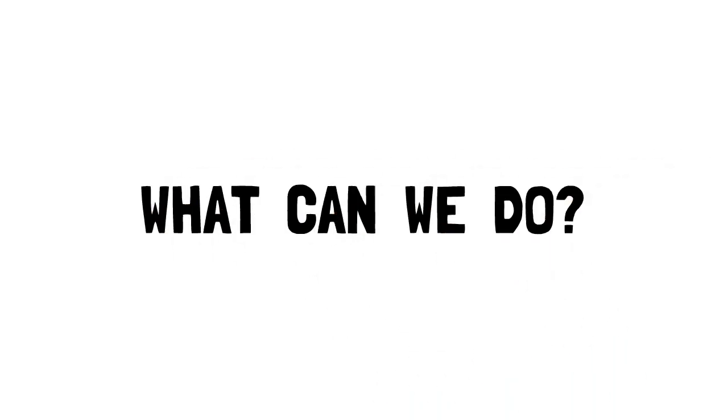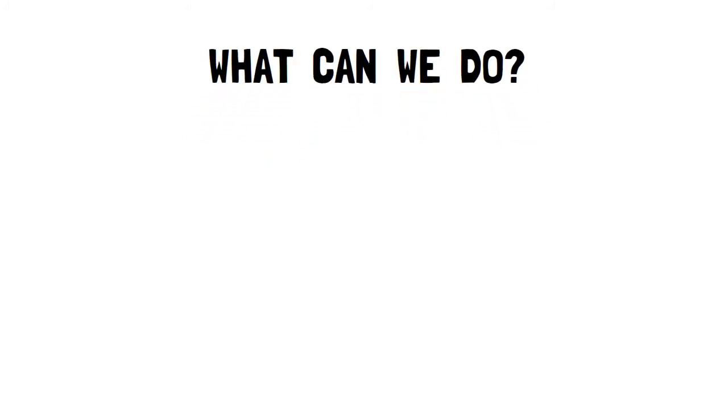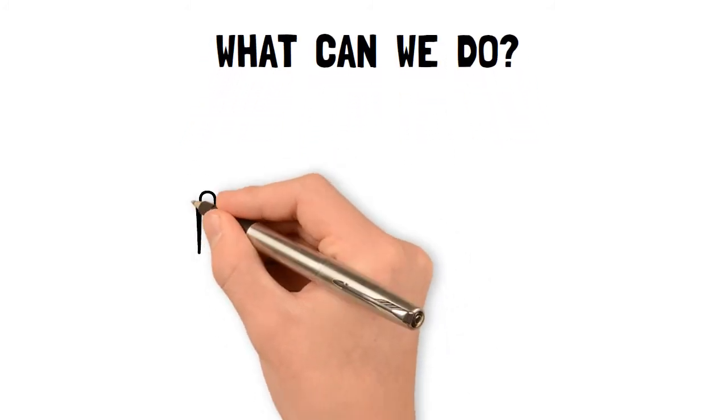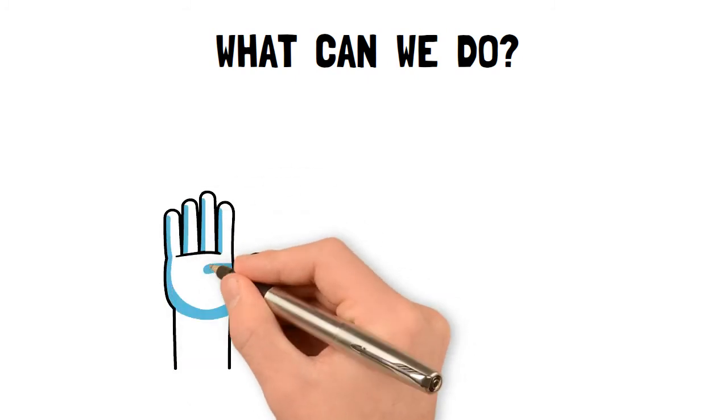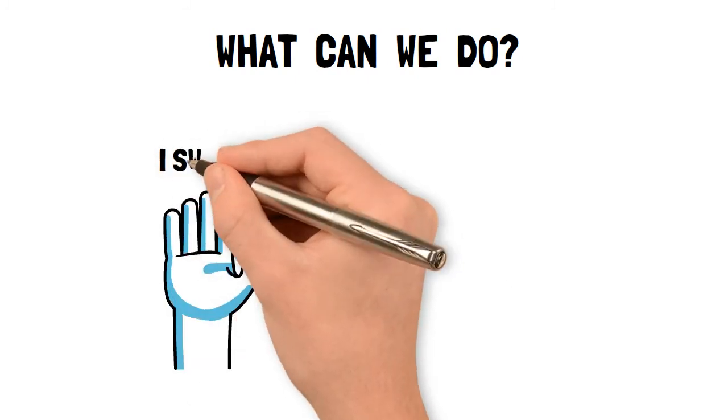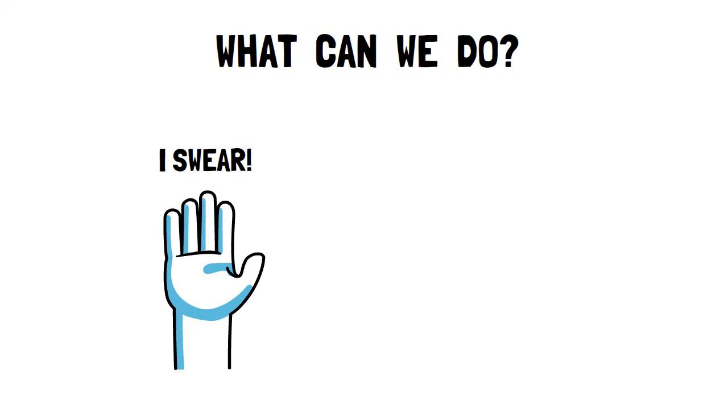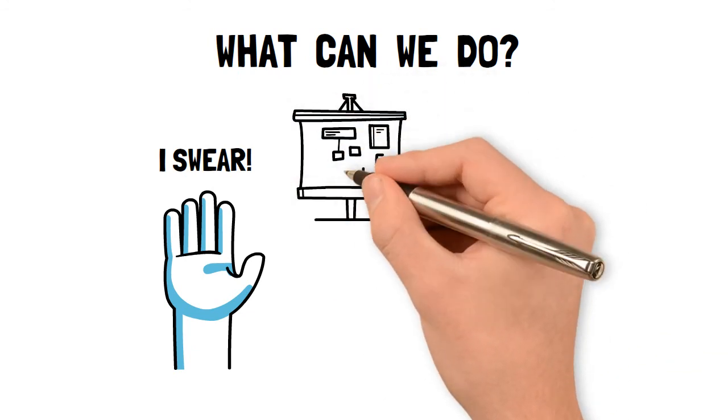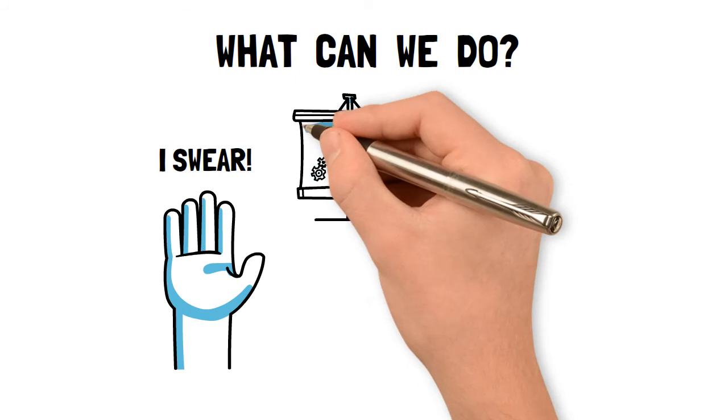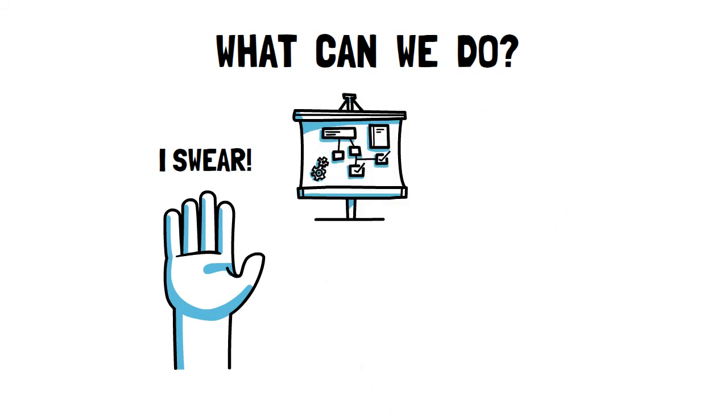So, what can we do about it? The author proposes a bilateral approach. On one hand, the process should begin with the modelers themselves. Like doctors, data scientists should pledge a Hippocratic oath, one that focuses on the possible misuses and misinterpretations of their models. They need to re-evaluate success metrics in terms of profit and efficiency, and impose human values on these systems.